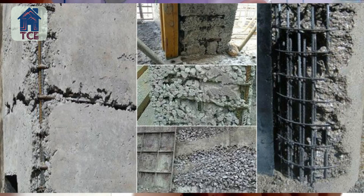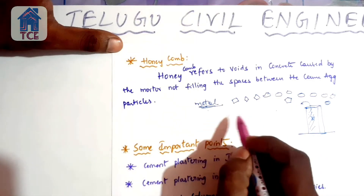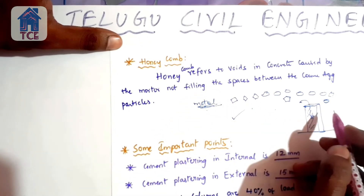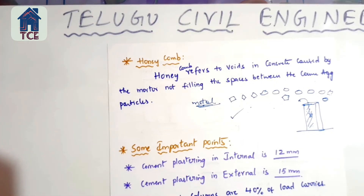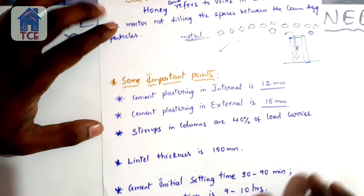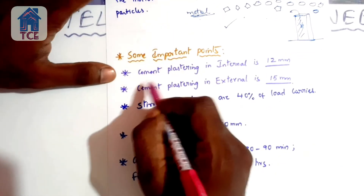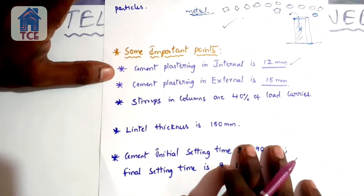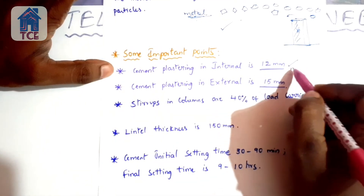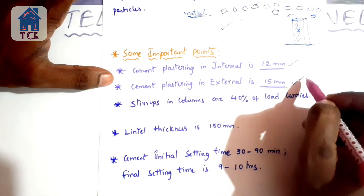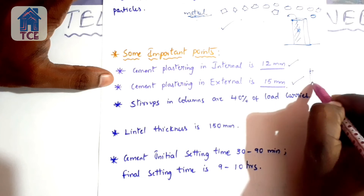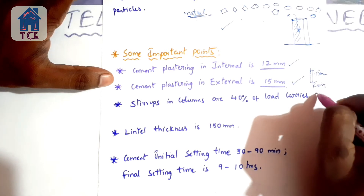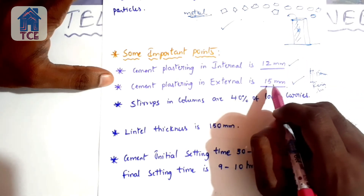Instead of hiding honeycombs, they must be properly treated. Cement plaster will be applied internally with 12mm thickness, and at the bottom with 15mm thickness. This protects the concrete from rain and sun exposure, and the plastic cover thickness is maintained accordingly.